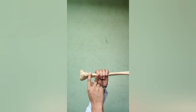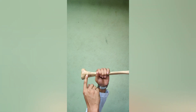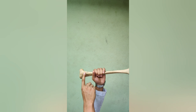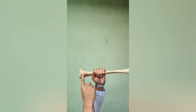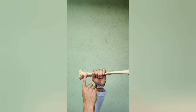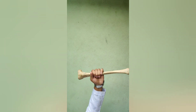Now the tibial tuberosity. It has two parts: the upper part is the smooth part on which there is the insertion of the patellar ligament, and the lower part is a rough part which is subcutaneous and separated from the skin by the infrapatellar bursa.